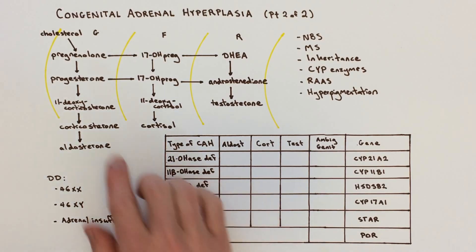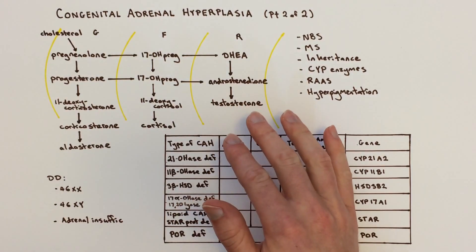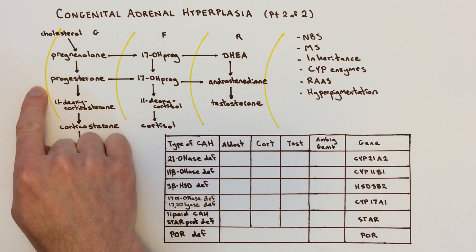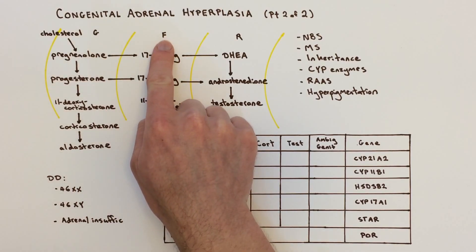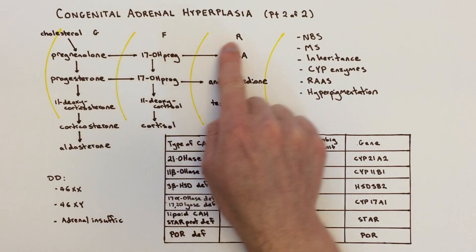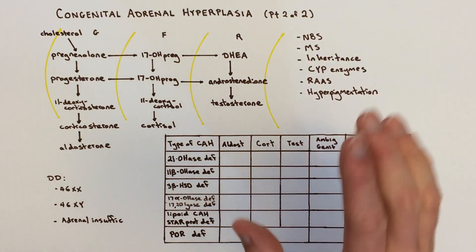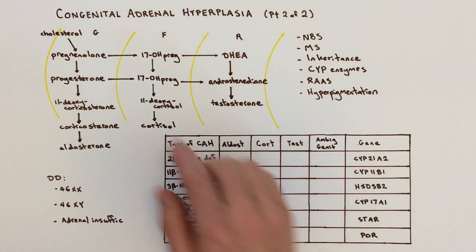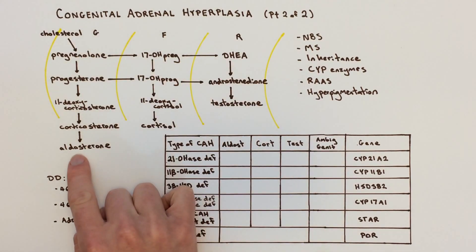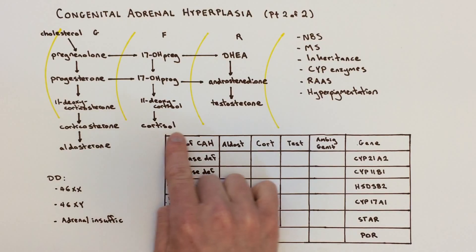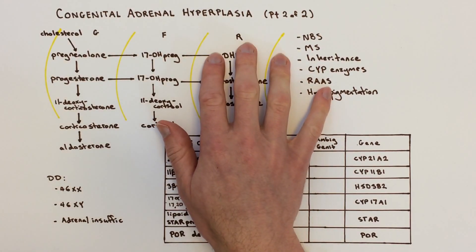Before we dive in, let's remind ourselves about this pathway. This is the adrenal cortex, which has three layers from outside: the zona glomerulosa, the middle zona fasciculata, and the innermost zona reticularis, with the adrenal medulla at the very center. Each layer is charged with a different task — the glomerulosa makes aldosterone, the fasciculata makes cortisol, and the reticularis makes testosterone — so one steroid hormone per layer of the cortex.